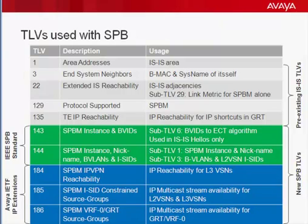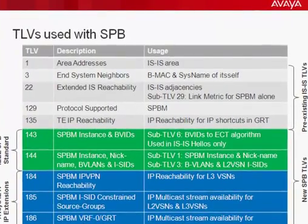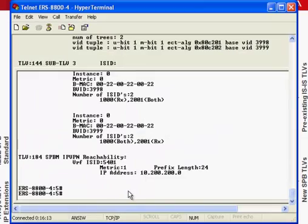Those are IETF extensions, and you will see further extensions being posted for things such as IPv6. TLV 184 shows IP VPN reachability. TLVs 185 and 186 provide for IP multicast type length value extensions. Once we learn how to read all of this, it becomes a very valuable visible window into the SPB network environment.